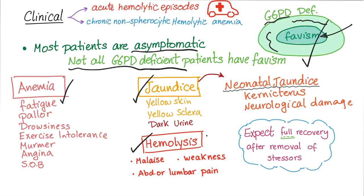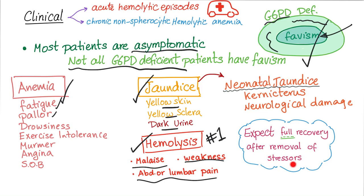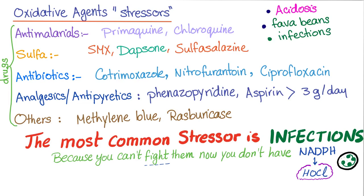The first symptoms to appear are those related to hemolysis: malaise, weakness, and abdominal or lumbar pain. Later, jaundice appears — yellow skin, yellow sclera, and dark urine. Symptoms of anemia include fatigue and pallor. You should expect full recovery after removal of the stressor. If the Egyptian kid stops eating falafel, he will be fine for the rest of his life, as long as he avoids it.